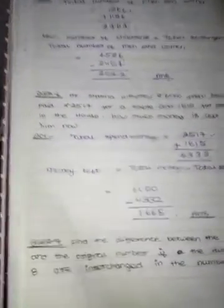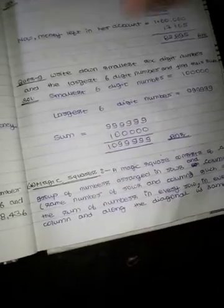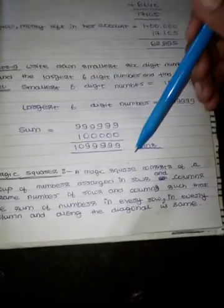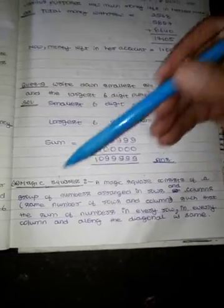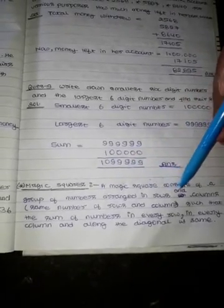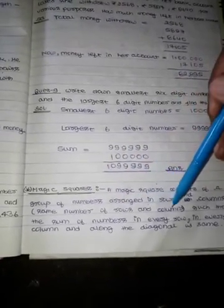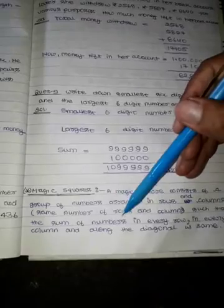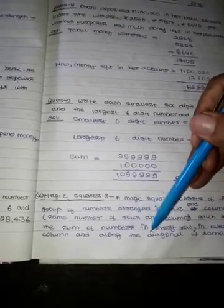Question number 7, 8, 9, same logic. Now magic square, magic square most important topic. A magic square consists of a group of numbers arranged in rows and columns, same number of rows and columns, such that the sum of numbers in every row, in every column, and along the diagonal is the same.